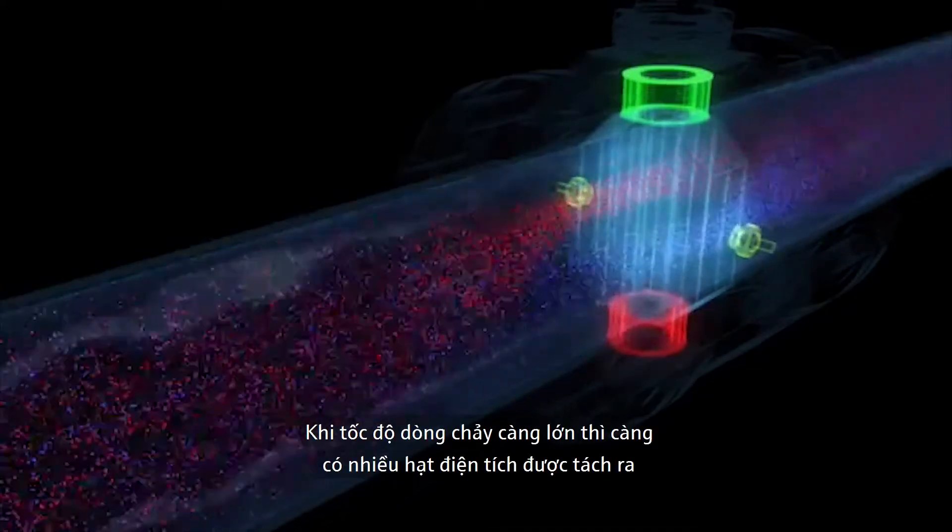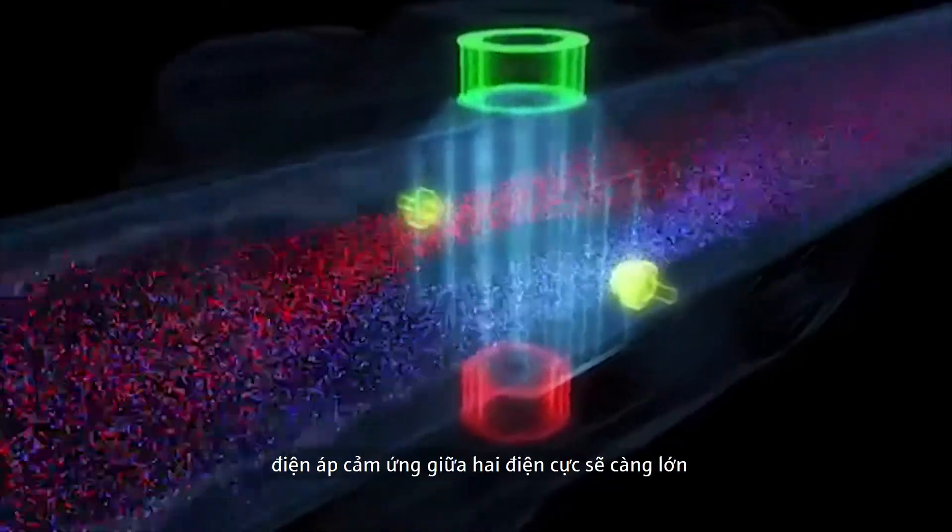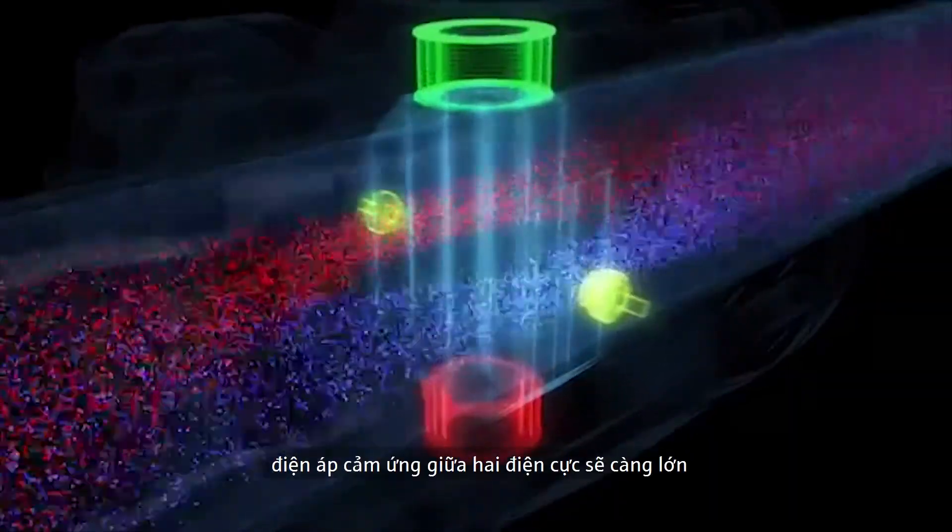The greater the flow velocity and thus the separation of the charged particles, the greater the electrical voltage between the electrodes.